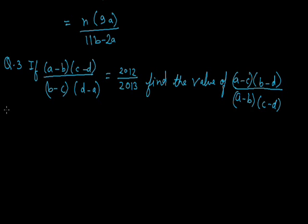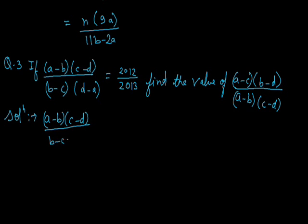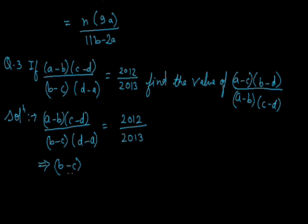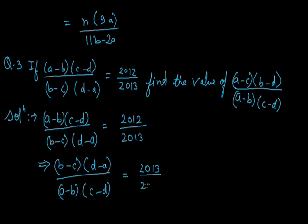Let's start the solution. The given value is that (a minus b)(c minus d) upon (b minus c)(d minus a) is equal to 2012 upon 2013. We can make it reciprocal, so (b minus c)(d minus a) upon (a minus b)(c minus d) is equal to 2013 upon 2012.